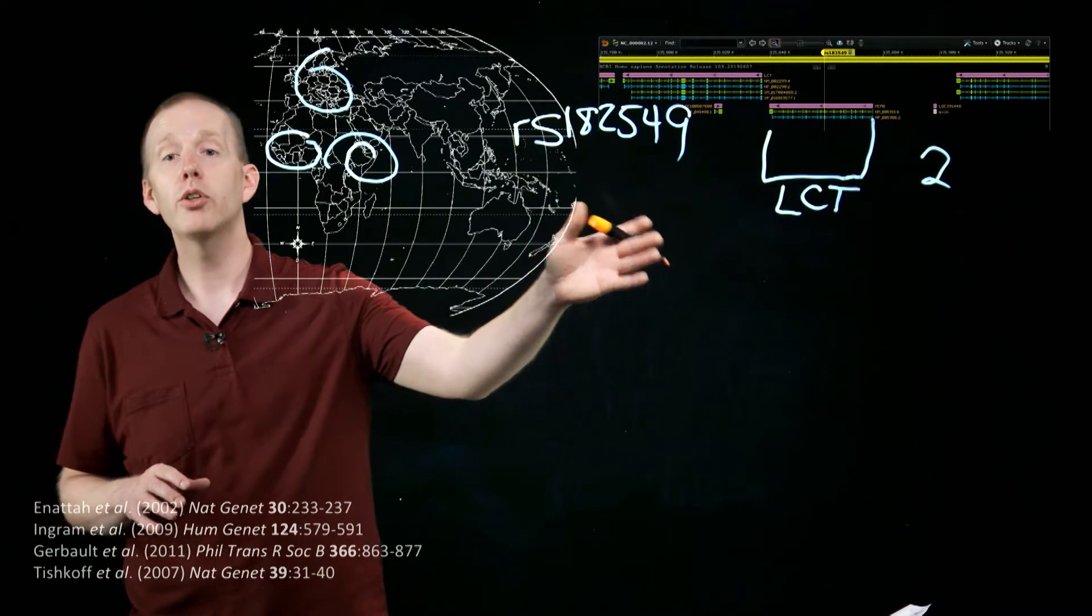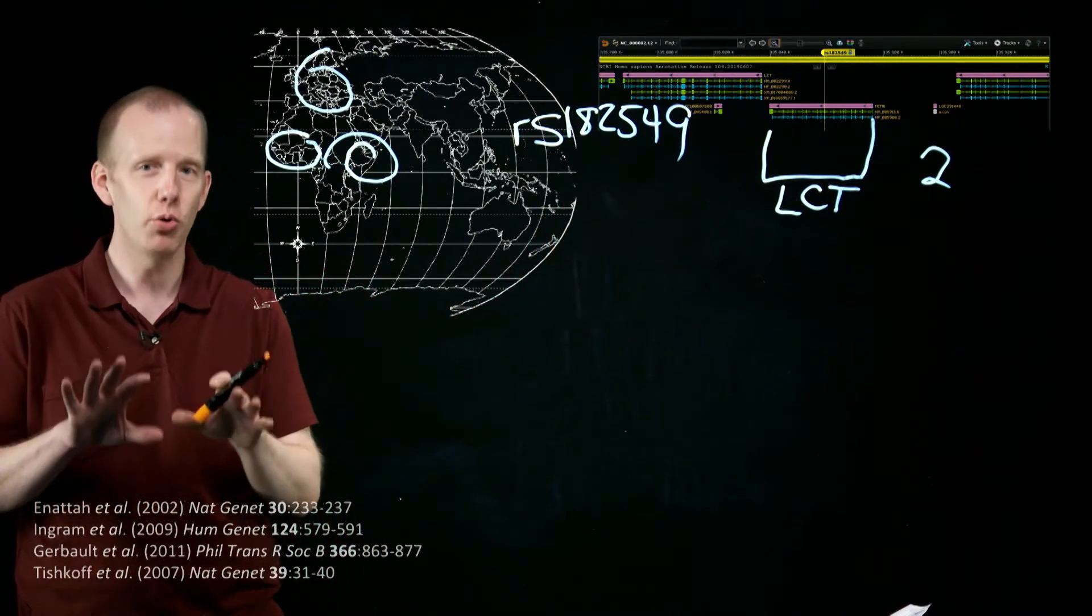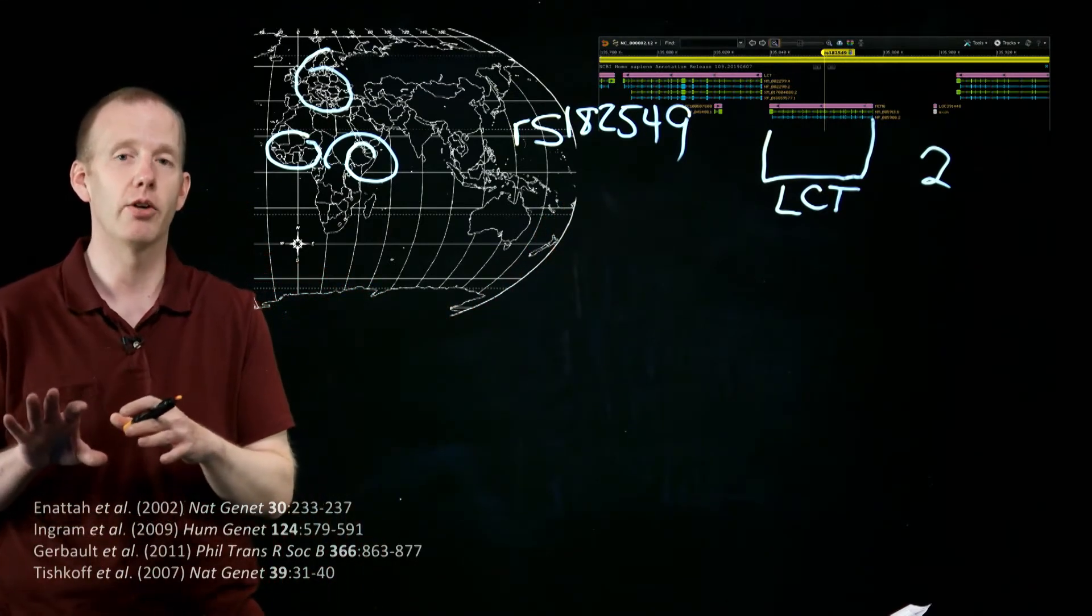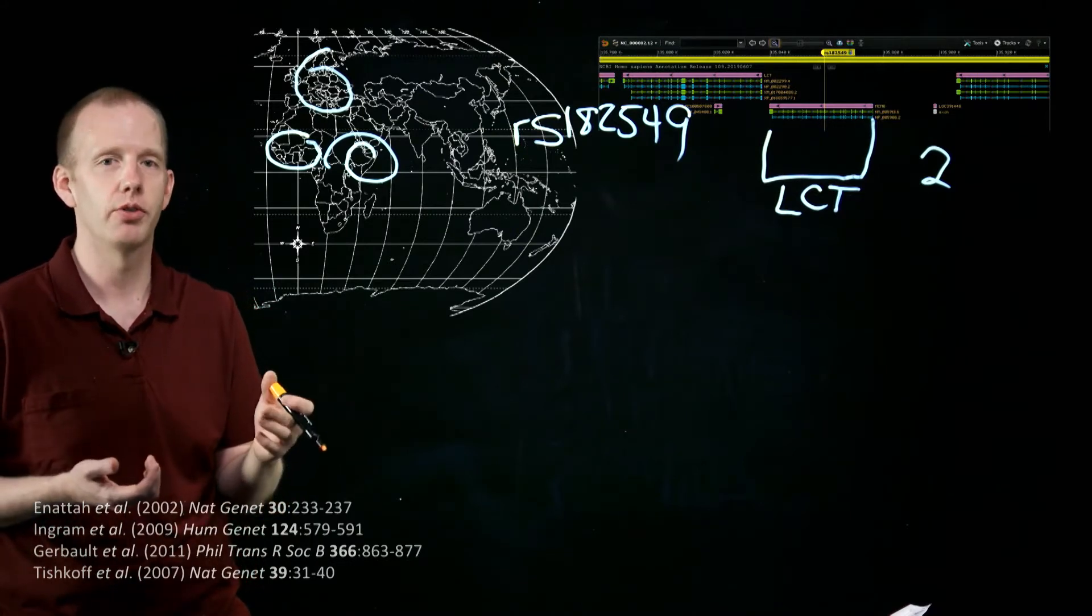So that gene is normally turned on in infants so they can digest lactose, and then in most humans it turns off later in life, and that leads to lactose intolerance.